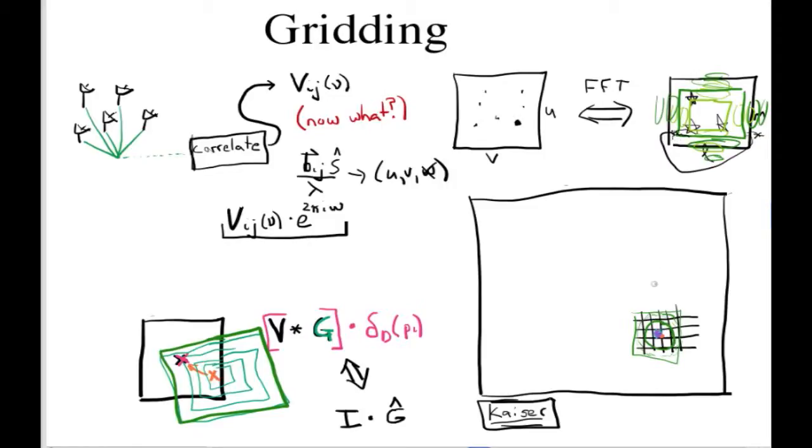So that's gridding at its most basic form. Now there's some more advanced uses of gridding for improving the quality of your image. One of those has to do with W projection. One of those has to do with the effects of having a wide field of view.